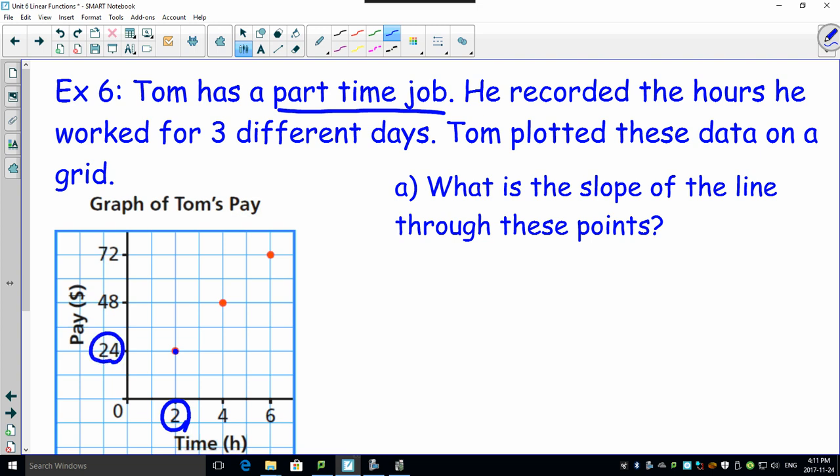One day he worked two hours and he got paid 24 bucks. The next day he worked four hours and got paid 48 bucks. The next day, six hours, he got paid 72 bucks. I know what your brain is thinking right now - you could probably figure out his hourly wage. I want to do that through slope because it asks you right here, what is the slope of this line?